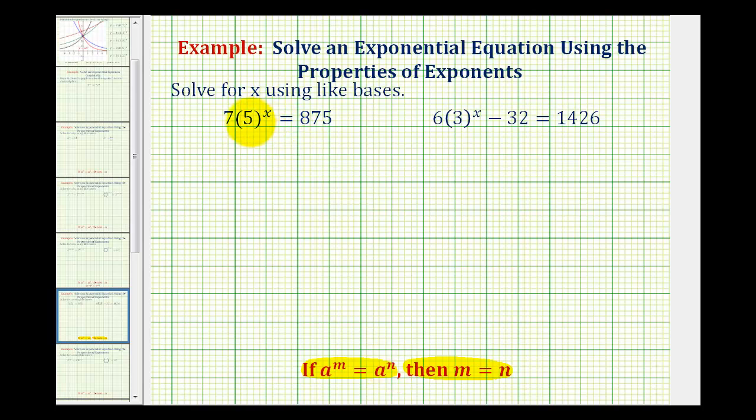Since this 7 is connected by multiplication, we'll divide both sides by 7. Seven over seven simplifies to one, so we have 5^x = 875 ÷ 7 = 125.